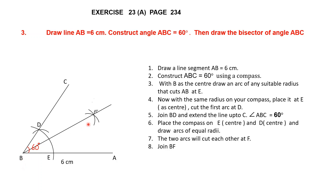As you can see, from B to F we have a line, and now angle CBF equals angle ABF, which equals 30 degrees. So angle CBF is 30 degrees and angle ABF is 30 degrees. First we constructed an angle of 60 degrees, then we divided it into two equal halves. We've completed question 3.